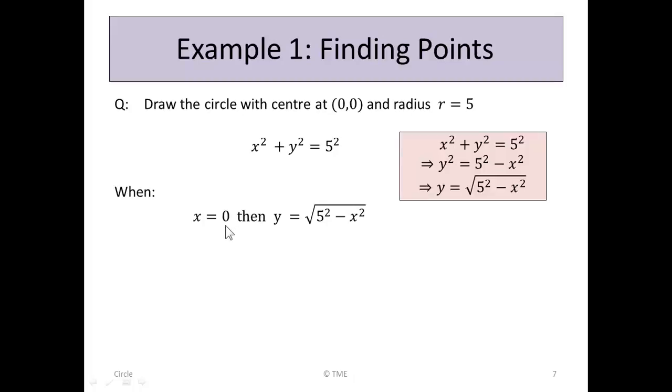Let's start now by putting in a relatively simple value for x when x is 0. When x is 0, y is equal to the square root of 5 squared minus x squared. But now we can substitute the 0 for the x. y becomes the square root of 5 squared minus 0 squared. 5 squared is 25, 0 squared is 0. y becomes the square root of 25.